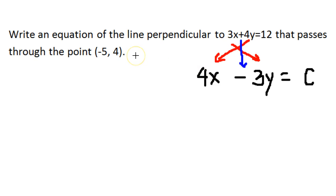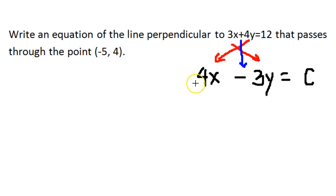Now in this specific example, we have the instructions that say: write an equation of the line perpendicular to 3x plus 4y equals 12 that passes through the point negative 5 comma 4. So now we're going to replace the x and y in this new equation with the x and y coordinates of the point that's given.